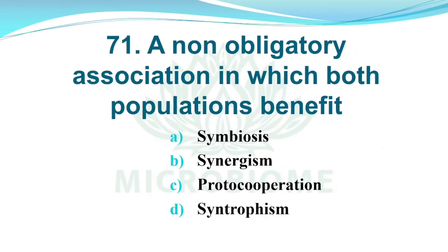And next, a non-obligatory association in which both populations benefit. Options: A) Symbiosis, B) Synergism, C) Proto-cooperation, D) Syntrophism. The right answer is Option C, Proto-cooperation.